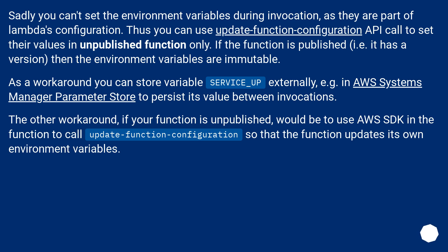As a workaround, you can store the variable service_up externally — for example, in AWS Systems Manager Parameter Store — to persist its value between invocations. Another workaround, if your function is unpublished, would be to use the AWS SDK inside the function to call update_function_configuration so that the function updates its own environment variables.